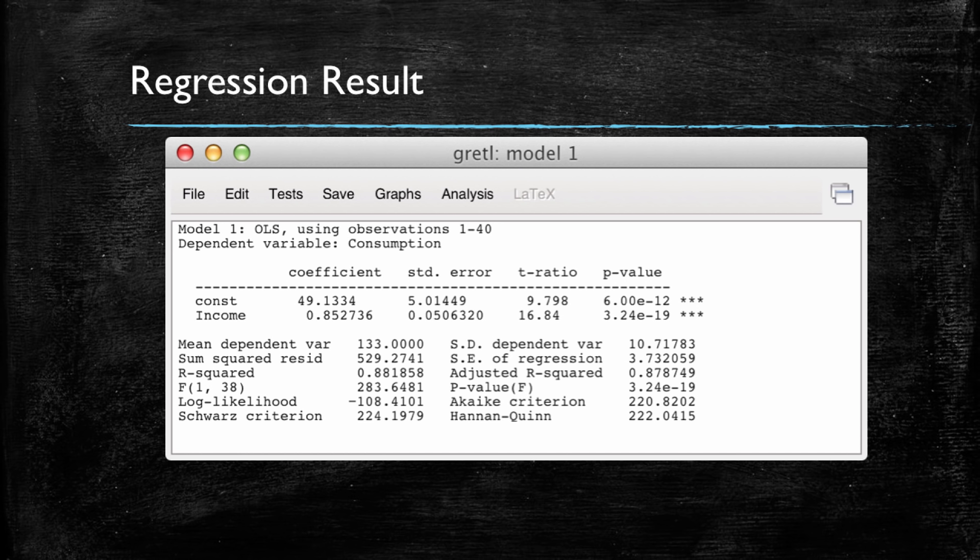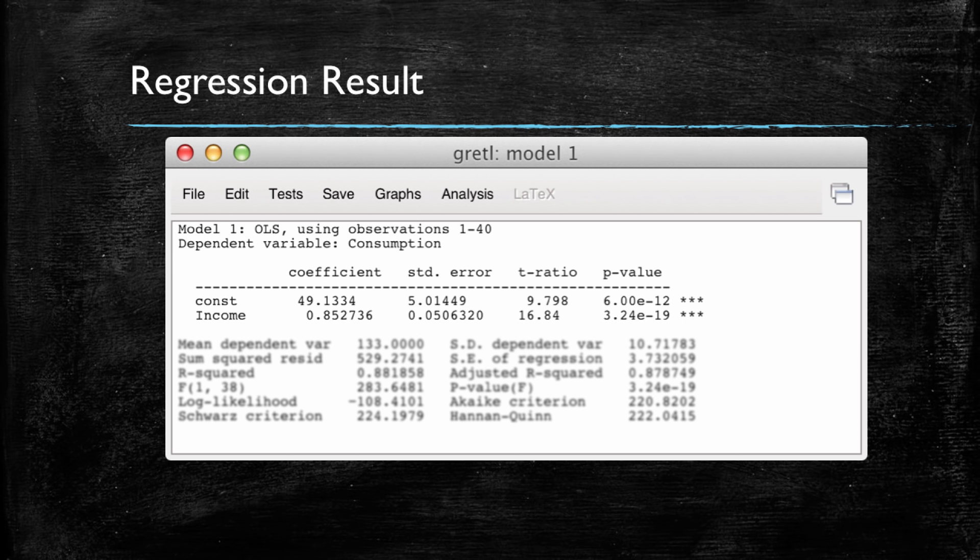If we throw this into a statistical package such as Gretl, this is what we observe. And for now, don't worry about all the numbers you see here. We will learn about them later. Focus on the coefficients, which are two. And Gretl is indicating that our constant term is 49.1334 and that the coefficient for income is 0.852736.